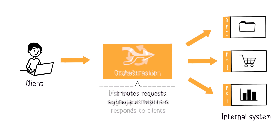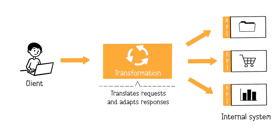Not all applications speak the same language. An API Gateway translates requests and responses between different protocols, allowing diverse applications to communicate seamlessly. It plays a transformation role when sending requests from the API Gateway to internal APIs, by adapting client requests to the formats used by internal APIs, whether in terms of data or expected protocols.